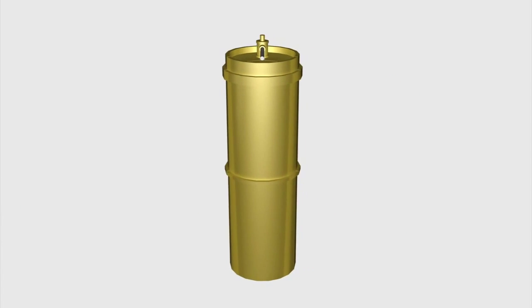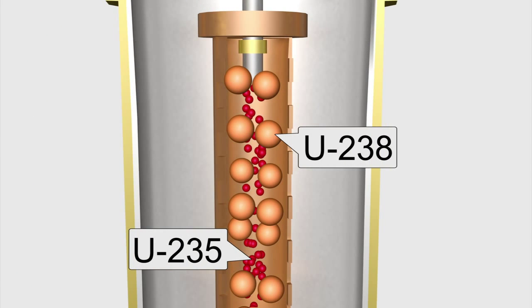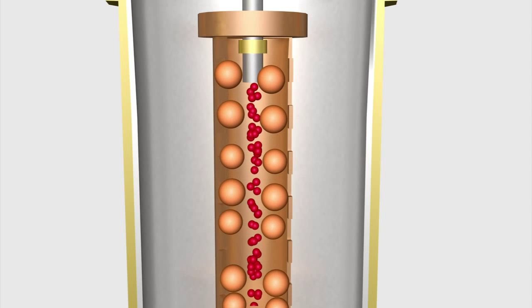Most enrichment plants today use centrifuges. As a centrifuge spins, the heavier Uranium-238 is forced towards the walls.